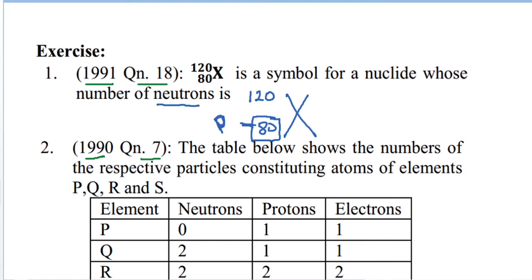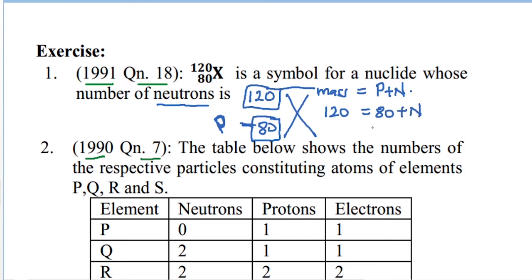They want us to find the number of neutrons. Up here we have the mass number, and we know that mass number equals number of protons plus number of neutrons. So: 120 = 80 + neutrons. Making neutrons the subject: 120 minus 80 gives us 40. The number of neutrons is 40.